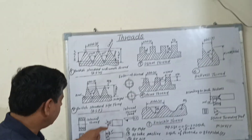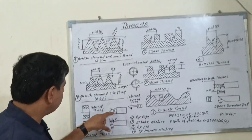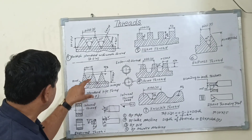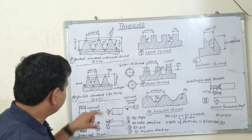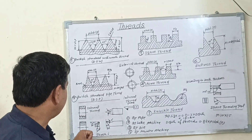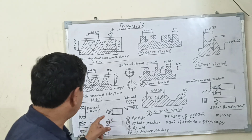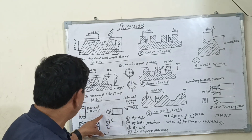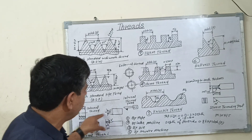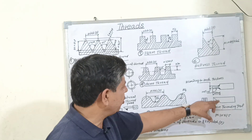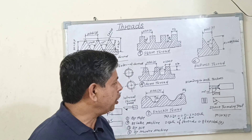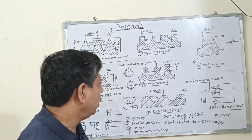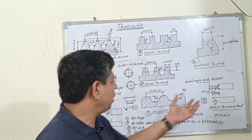If you want to cut this type of thread, you will prepare a geometric tool. This is a 65-degree angle tool — 65 degrees on this side and also 65 degrees on the other side. This is the V-type tool. Both the V-type tool and square-type tool are high speed cutting tools.